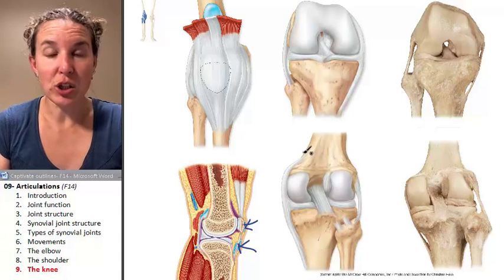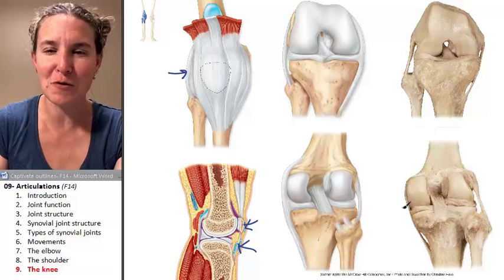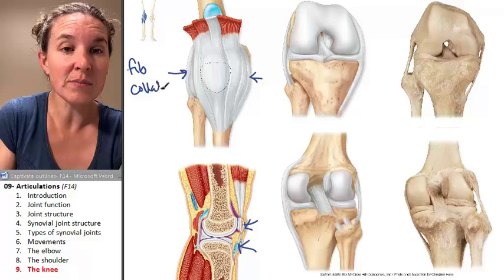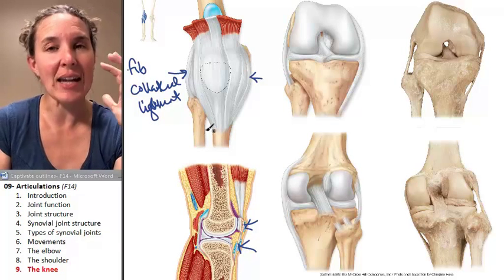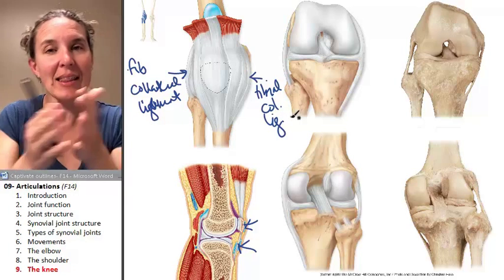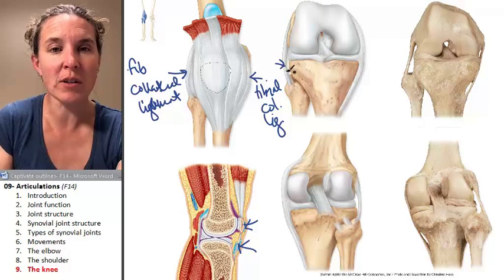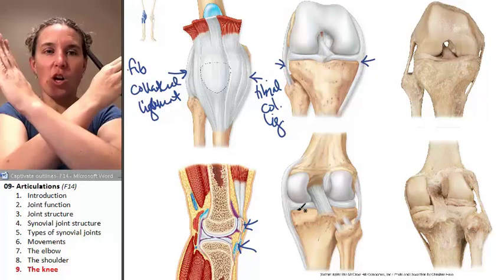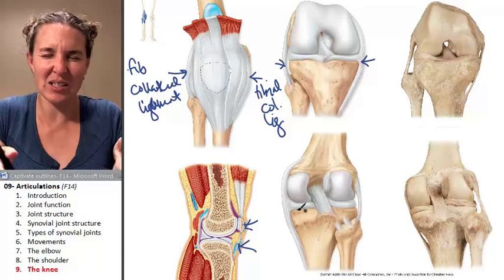We're going to look at just a few of the structures involved in the knee. First, probably most easily visualized are our collateral ligaments. We have a fibular collateral ligament on the lateral side, because the fibula is on the lateral side, and it helps strengthen the knee. You also have a tibial collateral ligament on the medial side of the knee between the tibia and the femur. Here's my fibular collateral, here's my tibial collateral. The collateral ligaments are straight and on the sides of your knee.